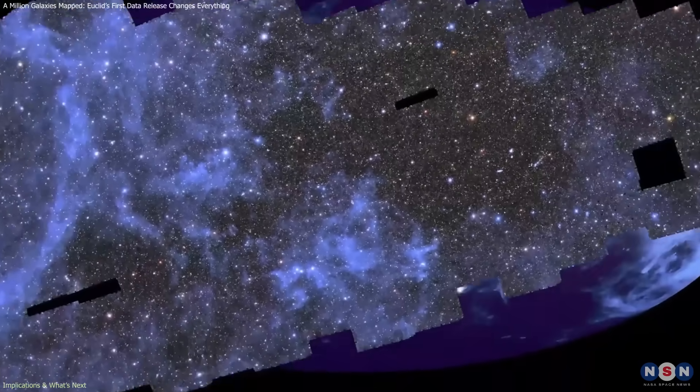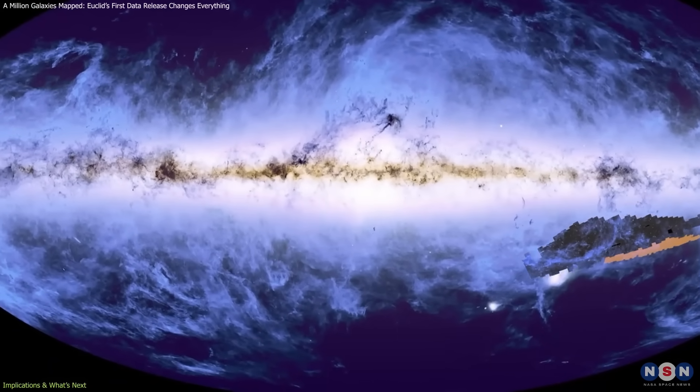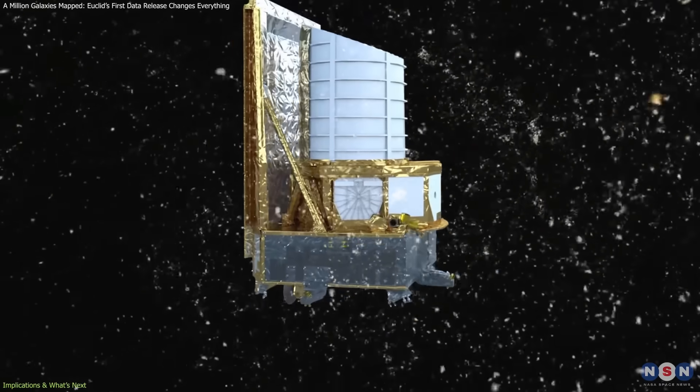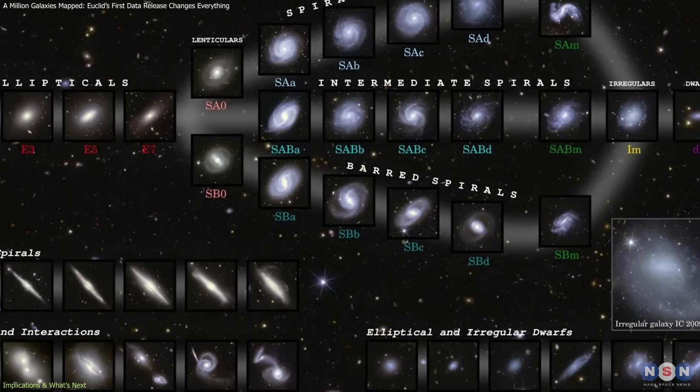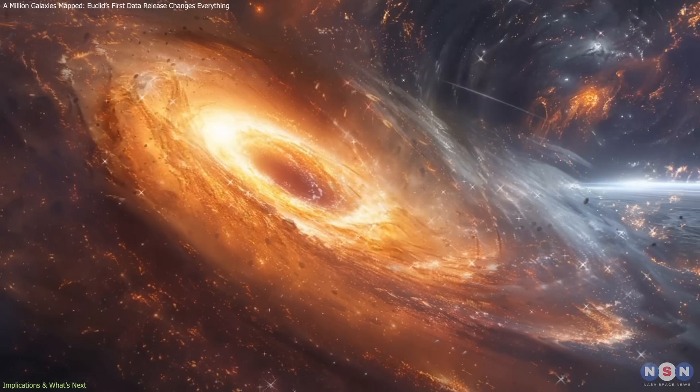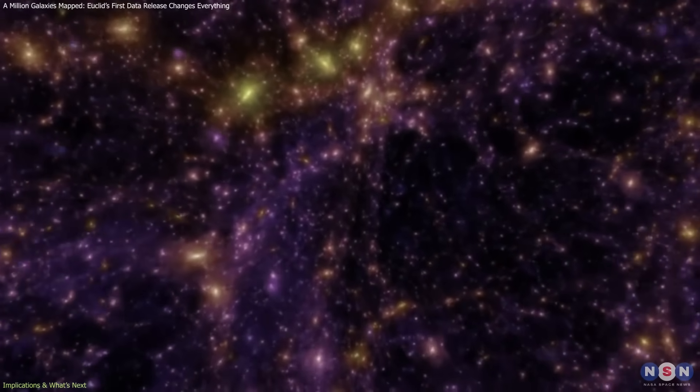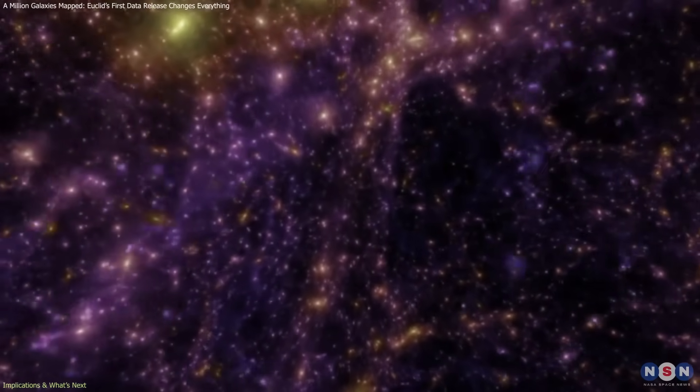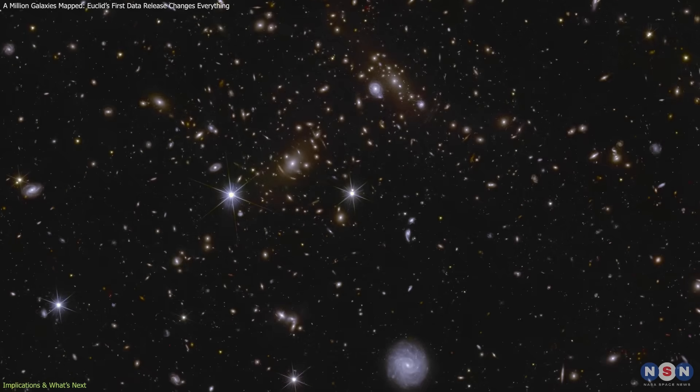Looking ahead, the mission's full releases will multiply the available data by orders of magnitude. The six-year survey will map billions of galaxies, allowing for more precise measurements of morphology, clustering, star formation, and central structure. As the dataset grows, astronomers will be able to link galaxy properties to their environments across the cosmic web with unprecedented clarity.